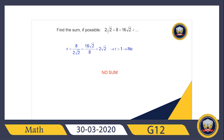In this example, the first term is 2√2, the second is 8, and the third is 16√2. It's not arithmetic, so it's geometric. We find r by dividing: 8 ÷ 2√2 = 2√2. This r is bigger than 1, so if you try to add these terms you get infinity — we have no sum for this sequence.